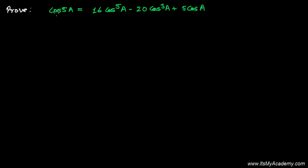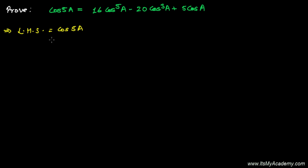In this video we're going to elaborate that cosine of 5a equals 16 cos⁵a minus 20 cos³a plus 5 cos a. We need to solve this after elaborating the cosine of 5a. So let's elaborate this — let me write first the left hand side: that's cosine of 5a.